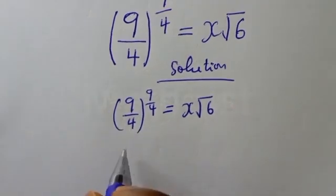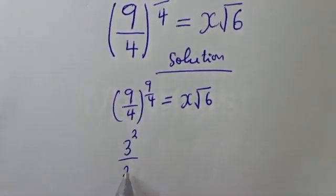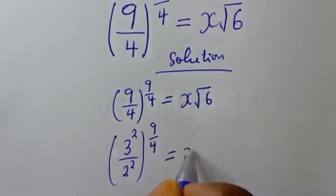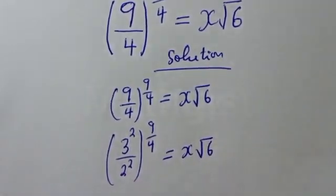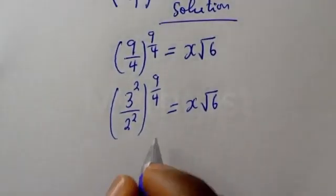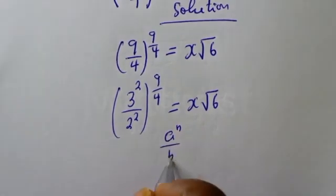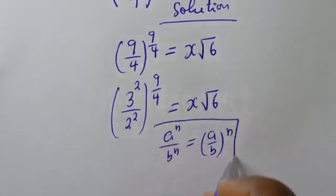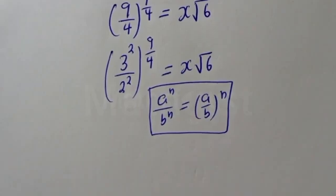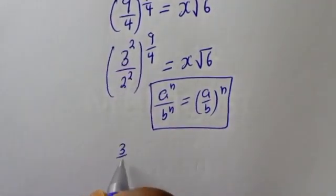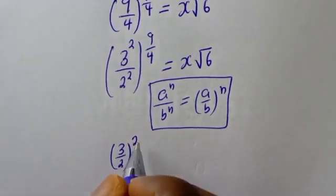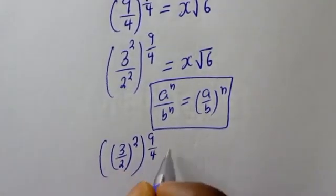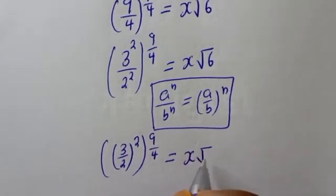We rewrite this as 3 squared over 2 squared, to the power of 9 over 4, is equal to s root of 6. Note that a over b raised to power n is equal to a^n over b^n. So this can be written as 3 over 2, to the power of 2, all raised to the power of 9 over 4, is equal to s root of 6.